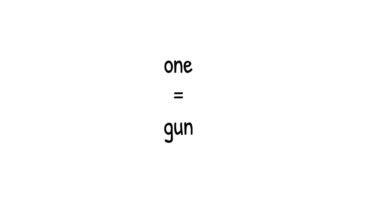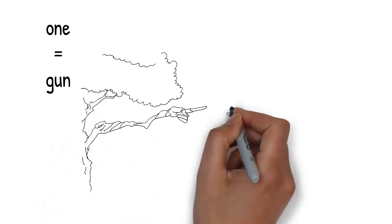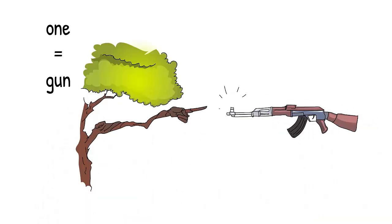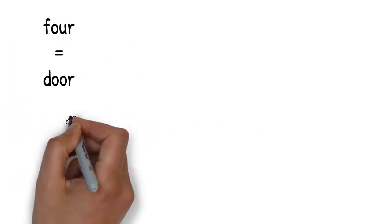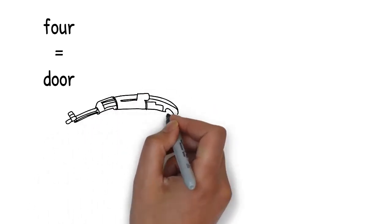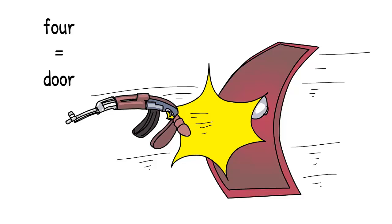Floating in the air to the right of the tree, pointing back at it, is a large gun. It's a machine gun and it looks very threatening. Gun rhymes with one. The gun is suddenly swatted out of the sky by a large door, like a fly swat swatting a fly. Door rhymes with four.